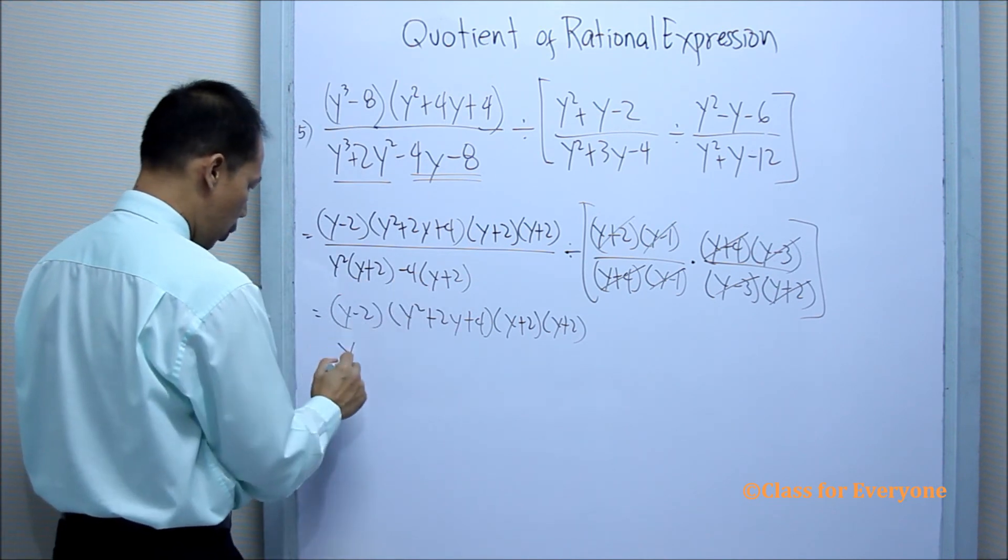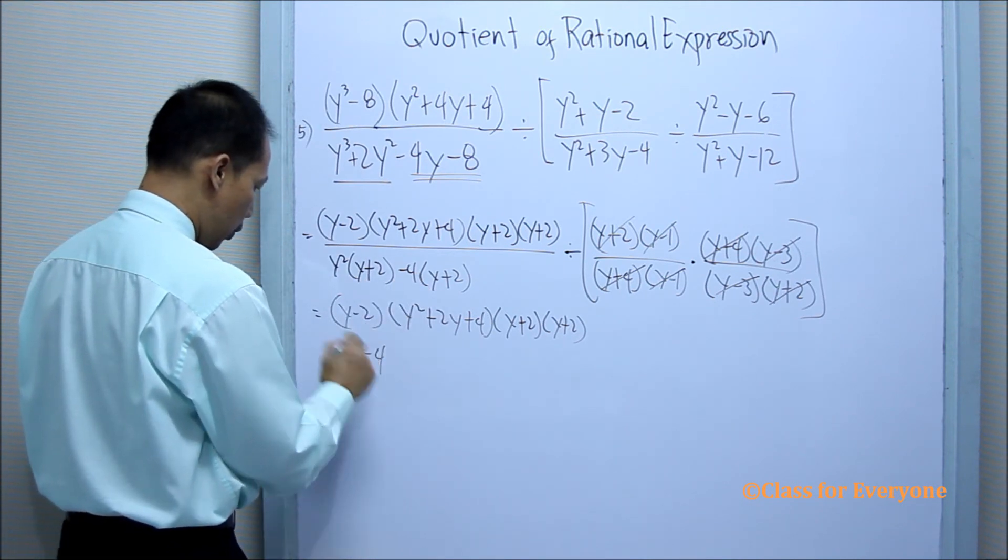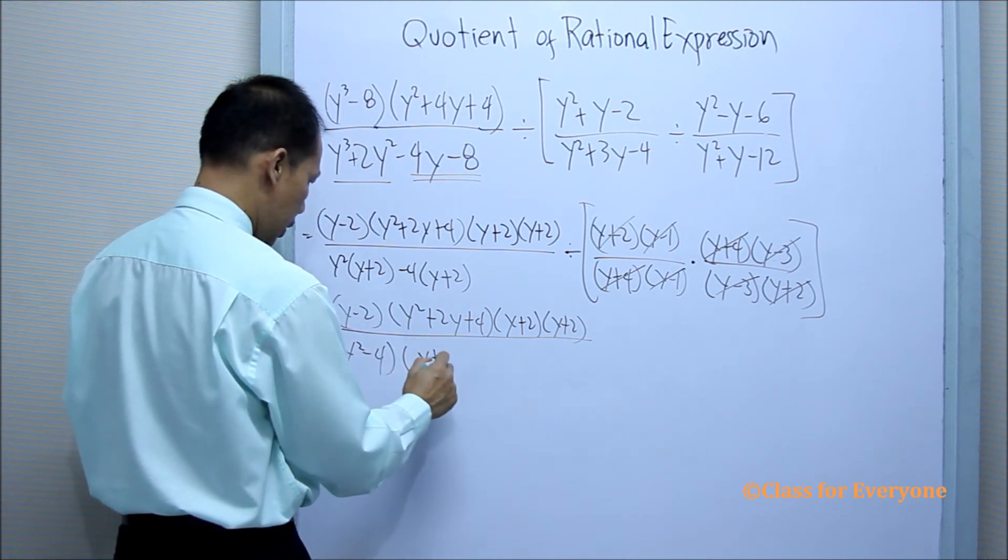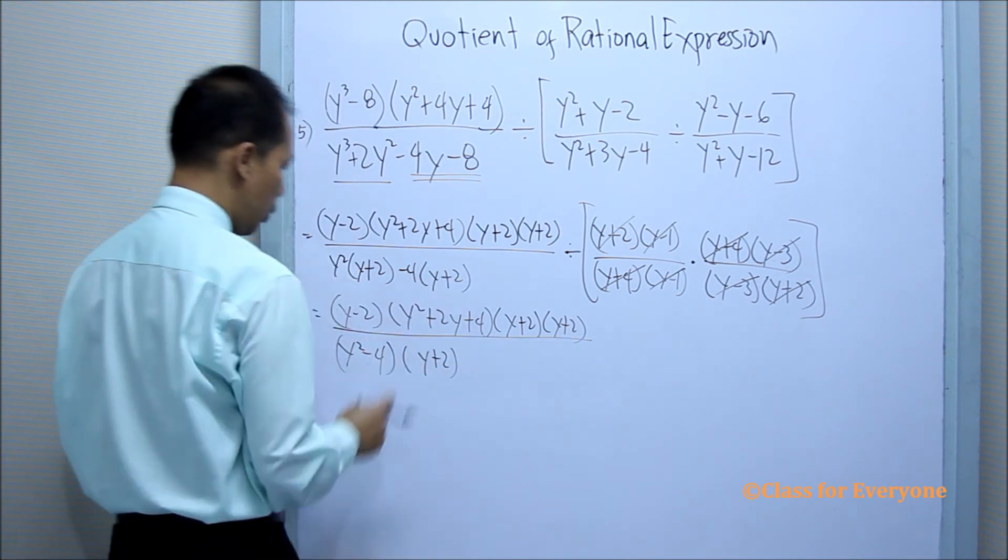In this one, we have y squared minus 4 times y plus 2, the common factor.